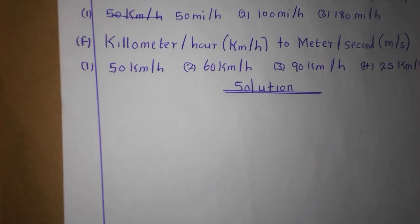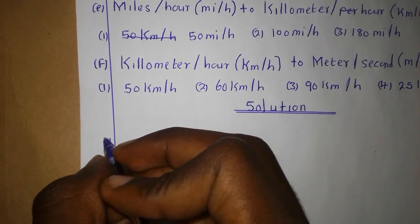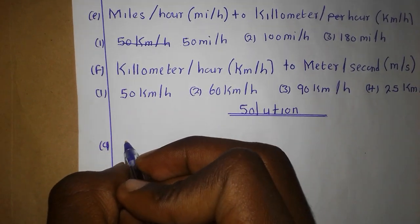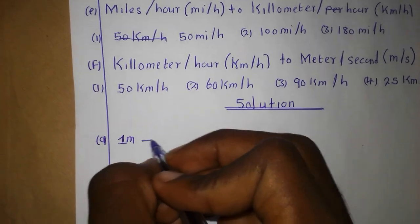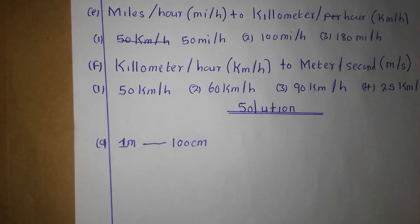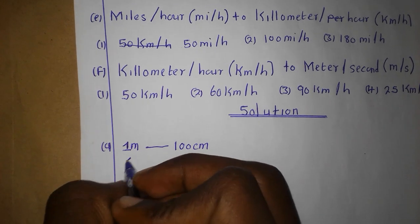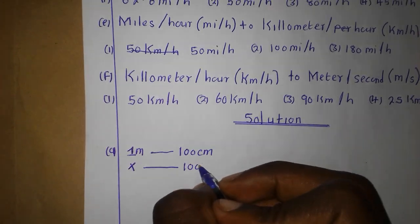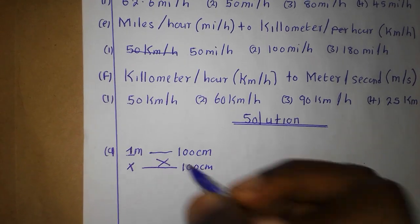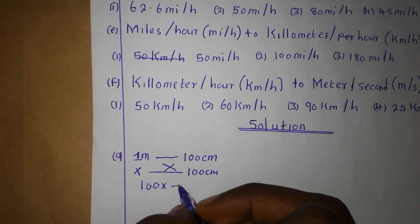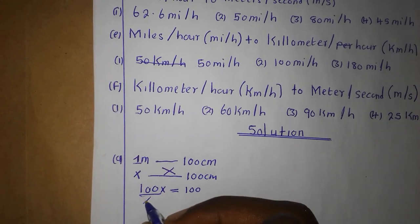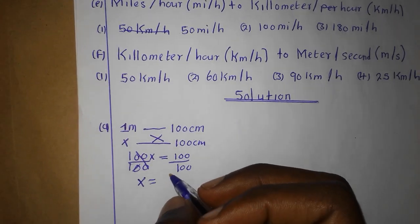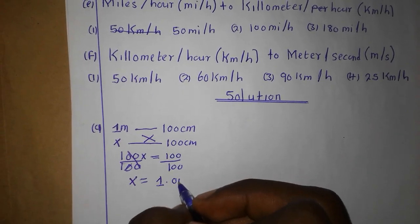For Part A, we know that 1 meter is equivalent to 100 centimeters. So x meters equals 100 centimeters. Cross-multiplying: 100x = 100, so x = 100 over 100. Therefore x equals 1.0 meters.